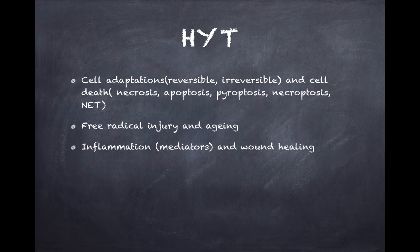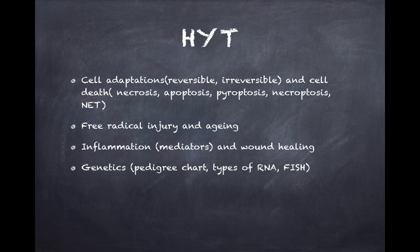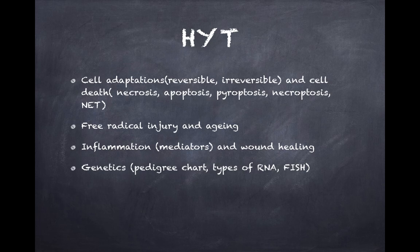Wound healing is again high-yielding. For genetics, first go through the pedigree legend — what each symbol means — then develop the logic to solve pedigree questions: identify whether a pattern is autosomal dominant, autosomal recessive, X-linked dominant, or X-linked recessive, and remember examples for each. For genetic engineering concepts, know the different types of RNA — coding and non-coding — and newer investigation techniques like FISH (fluorescence in situ hybridization), including how it is used and what the reports look like in Robbins.